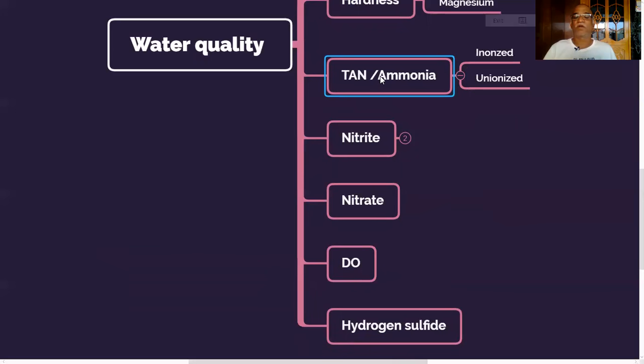Ammonia is more toxic at high pH and less toxic at low pH. So if the ammonia is high, another way of managing is maintaining the low pH.